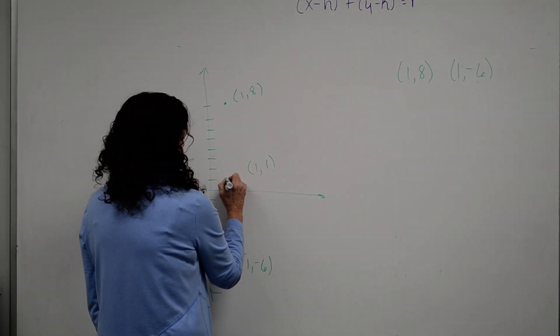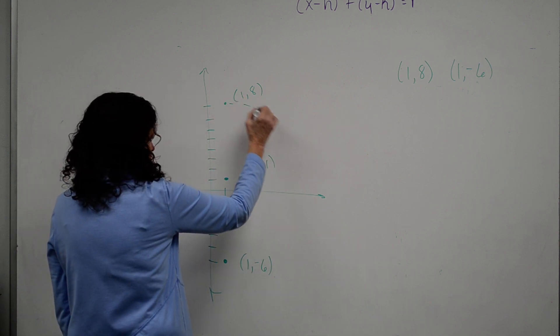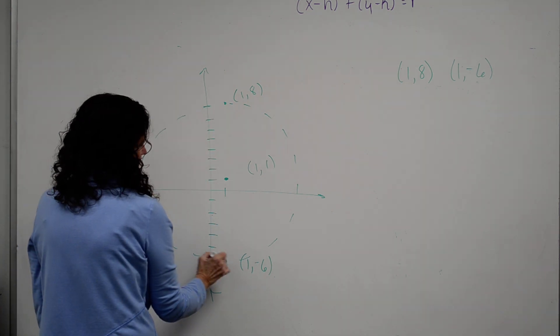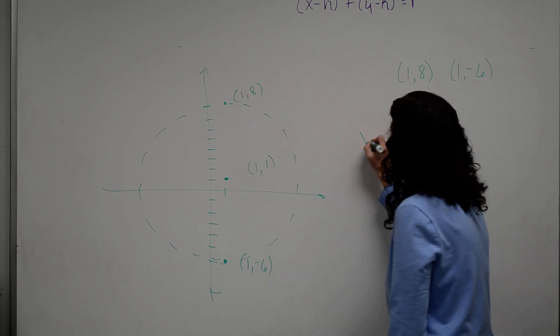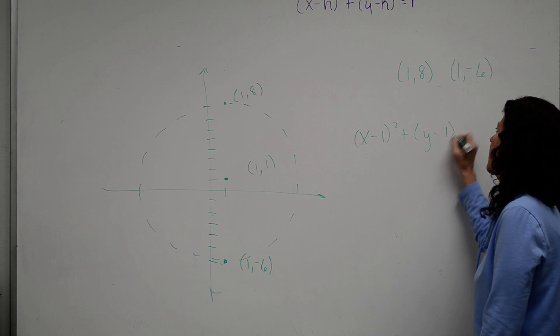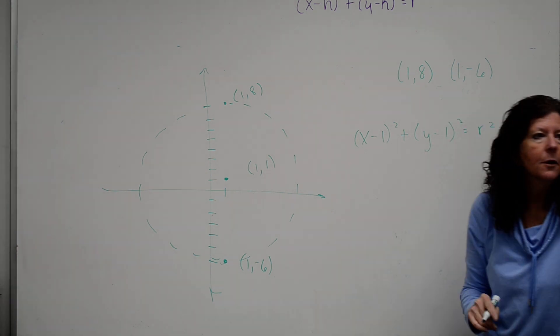So, therefore, the midpoint of my circle is at 1, 1. Alright, my circle looks like that, more or less. Okay? So, I've got x minus 1 squared plus y minus 1 squared is equal to the radius squared. How am I going to find the radius?